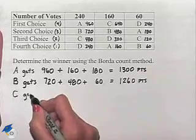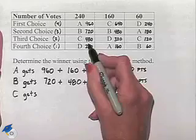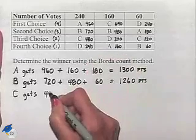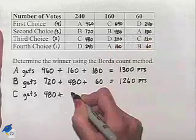Continuing on to candidate C. In our first column of votes, C will receive 480 points. In the next column, C receives 640 points.